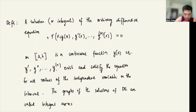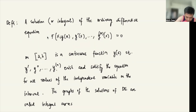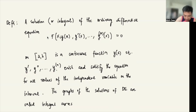A solution or integral of the ordinary differential equation f of x, y of x, y prime of x, until y to the n of x — where y to the n denotes the nth derivative — equal to 0 on a closed interval [a, b], is a continuous function y of x such that the n kinds of derivatives exist and satisfy the equation for all values of the independent variable.